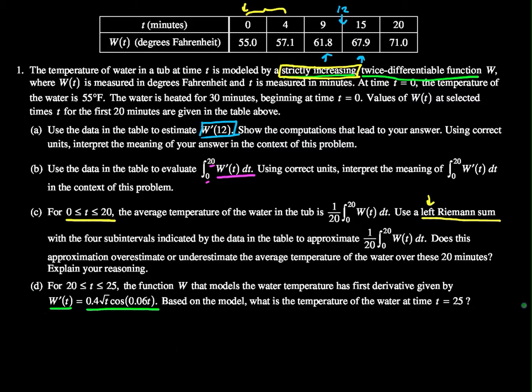This is an integral problem, a fundamental theorem of calculus problem. Pretty easy one, actually. What I know is this: I have times 20 to 25. If I were to integrate from 20 to 25 of this derivative, that would equal the change in water temperature from time 20 to 25. So it would be w of 25 minus w of 20.